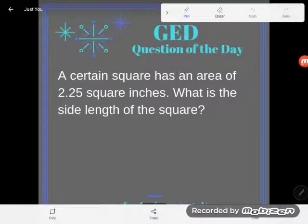Hey GED students, it's GED question of the day time and I've got a little geometry word problem here, pretty typical of the GED. It says a certain square has an area of 2.25 square inches. What is the side length of the square?